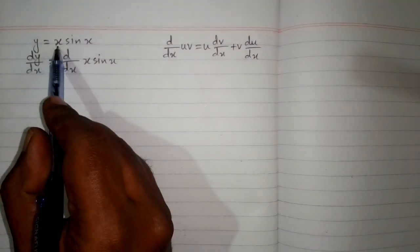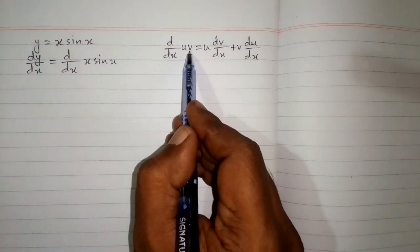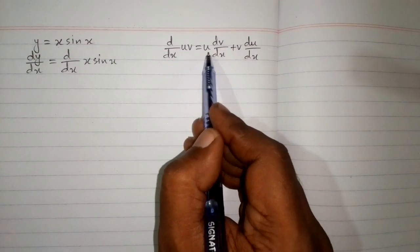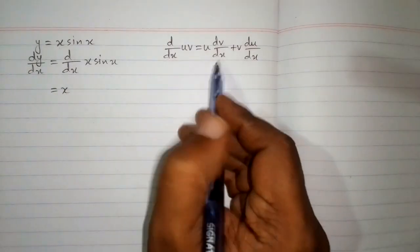We can see that we have x in place of u and sin x in place of v. So we will put these values in this formula. First we will write u is x, and then dv/dx means d/dx of sin x.